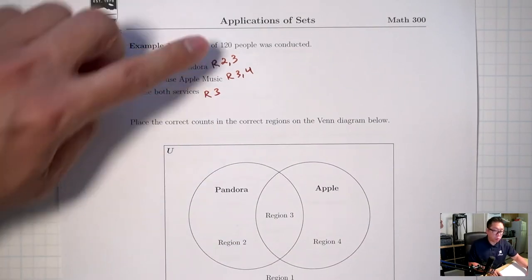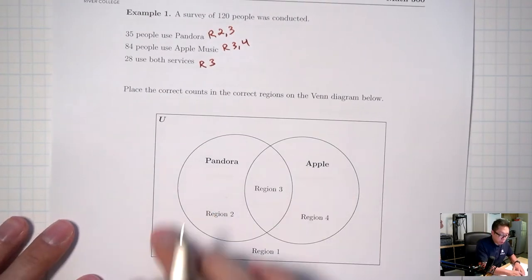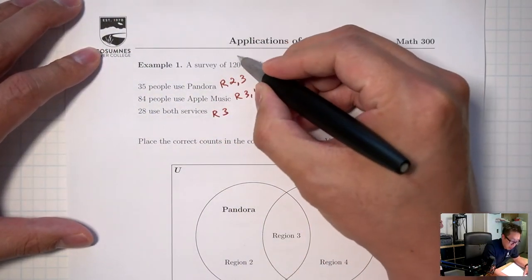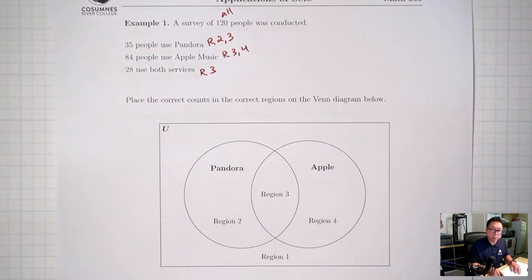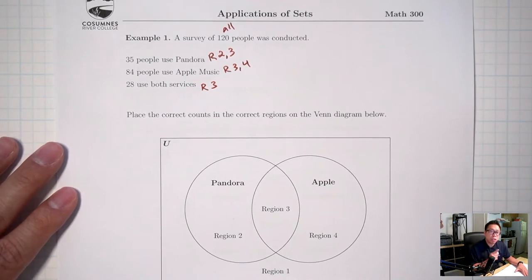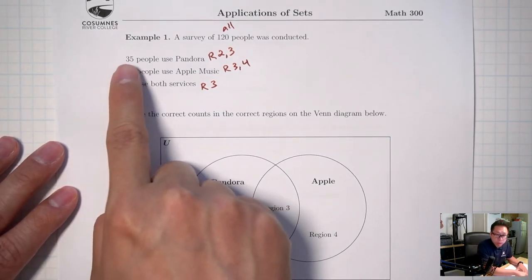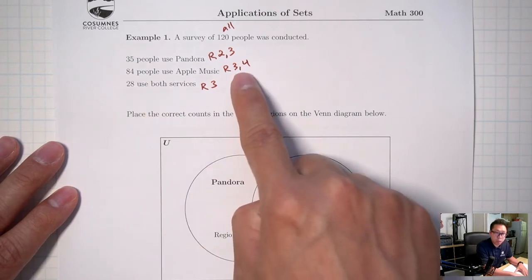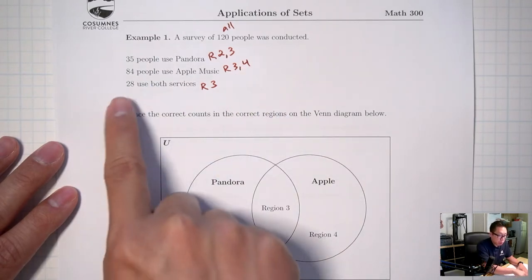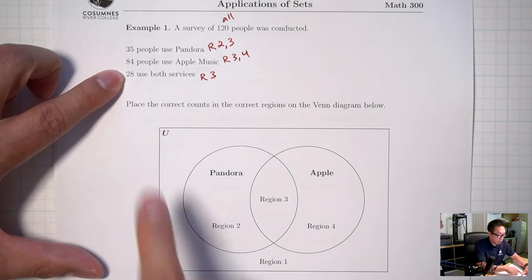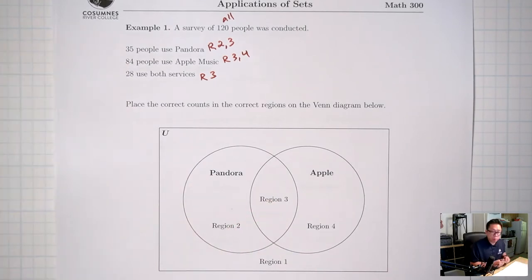I also have 120: 120 people were in the survey total, so all four regions together should add up to 120. My recommendation is to start with the clue that represents just one region. I won't start with 35 or 84 because those each represent two regions. I'll start with 28 because it's represented by just region 3. So region 3 should be 28 — I'll put 28 in region 3.